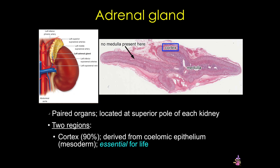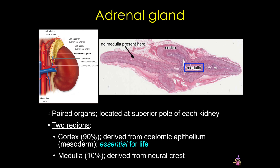The adrenal cortex is the larger outer region that is derived from mesoderm. It secretes an array of steroid hormones and is regulated largely by adrenal corticotrophic hormone from the anterior pituitary gland. Mineral corticoids secreted from the cortex are essential for life. The inner adrenal medulla is derived from neural crest, and it secretes catecholamines and is regulated via the sympathetic nervous system. These hormones are important, but not essential for life.